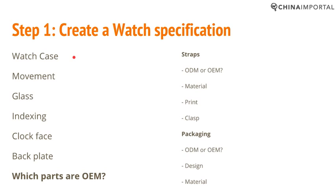You also need to specify the material. You have stainless steel, ceramic watches, zinc alloy, different types of stainless steel, wooden watches, and plastic watches. The watch case material is pretty much what decides the price. The same design in zinc alloy will cost say $5–$6, while the very same design in stainless steel is going to cost a lot more — say $18–$19. This is a huge price difference, and you can't compare prices between suppliers unless you know which material the quote is based on.